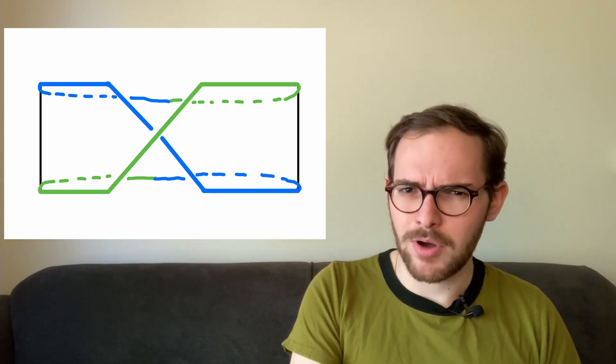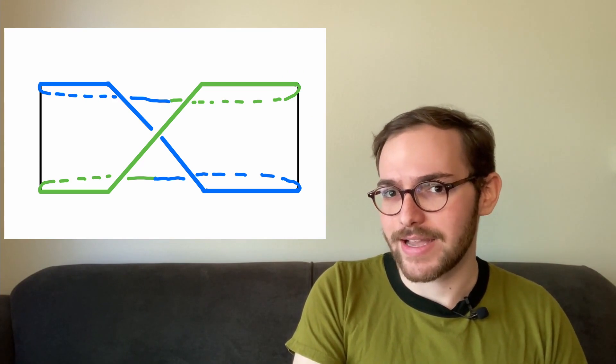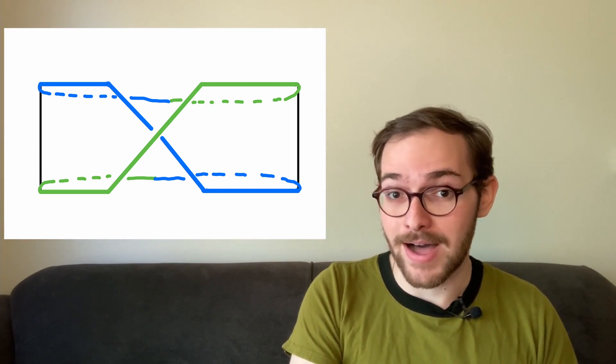What this shows is that a Mobius strip only has one connected edge, unlike a normal loop, which has a top edge and a bottom edge.